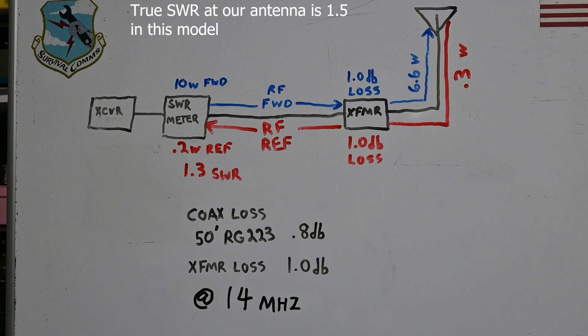I've set this up to demonstrate how system loss has an effect on SWR measurement. For our model system we have 50 feet of RG-223 that has 0.8 dB of loss and a transformer that has 1 dB of loss - this is at a frequency of 14 megahertz. To our left you can see our transceiver is hooked to a short jumper to our SWR meter. If we're talking about an antenna analyzer it could basically be both of those combined together. Our piece of test equipment, our SWR meter in this example, is measuring 10 watts of forward power, and that is the measurement reference for that particular piece of equipment. As our RF goes down through our cable and through our transformer, it's encountering 1.8 dB of loss, so the power that's actually going to the antenna is 6.6 watts, not 10 watts.